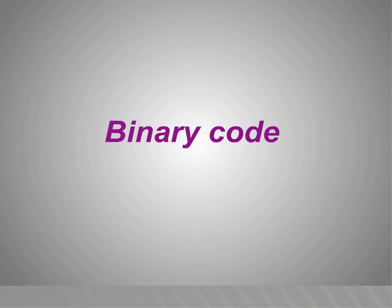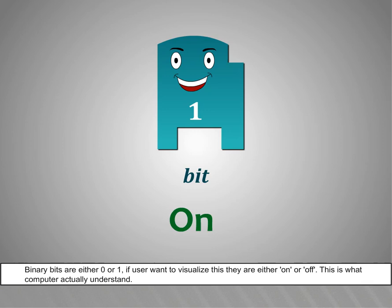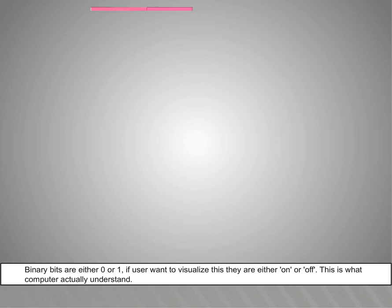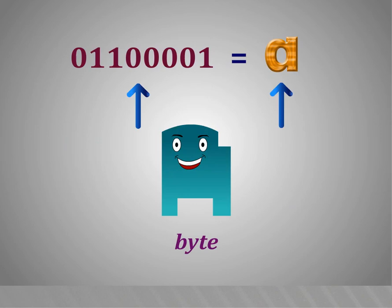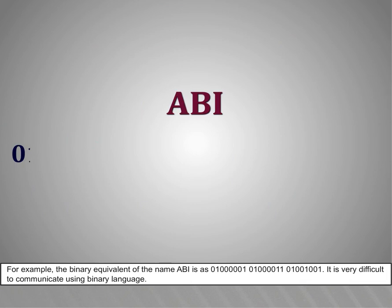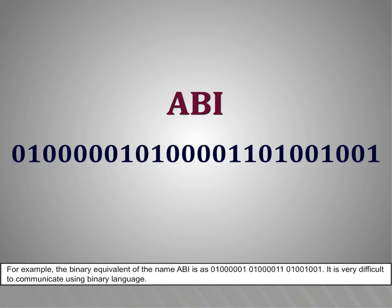Binary code. Binary bits are either 0 or 1. If the user wants to visualize this, they are either on or off. This is what computers actually understand. For example, the binary equivalent of the name ABI is 01000001, 01000011, 01000101.